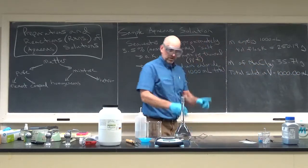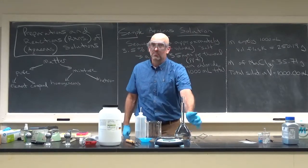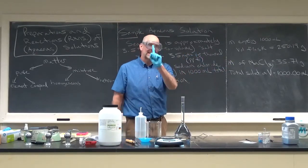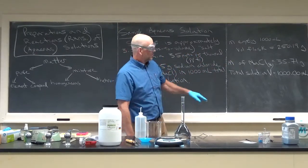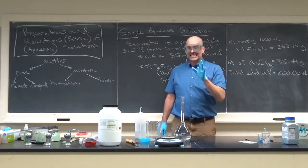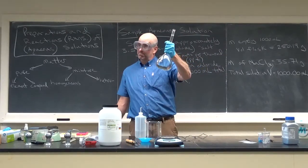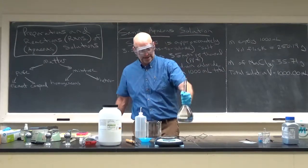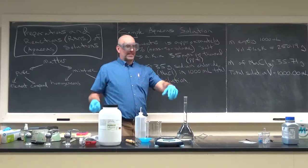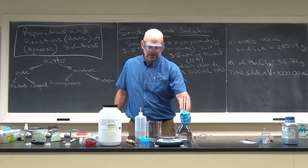The precision of this volumetric flask is excellent—1000.00 milliliters, six sig figs. TC means to contain. I'll use the approximation that 1 gram of water is about 1 milliliter, since the density of water is approximately 1.